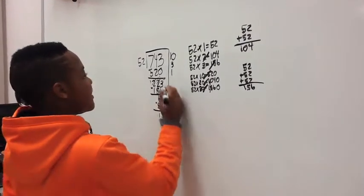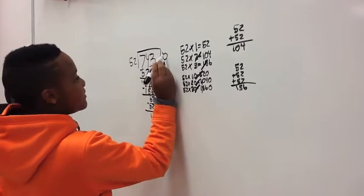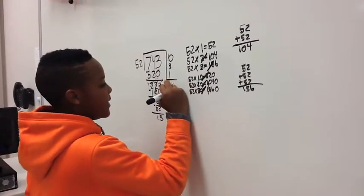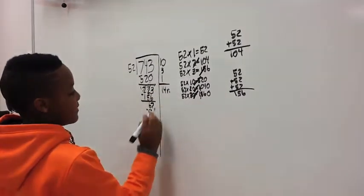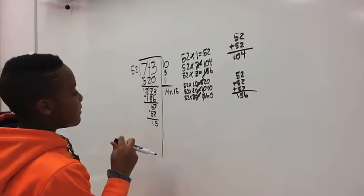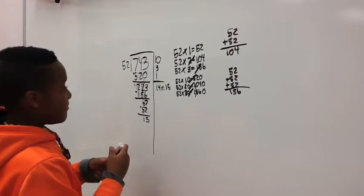Okay. So the answer, you add these up. Then the remainder is how many is left. So your answer would be 14 remainder 15. That would be your quotient? Yeah. Awesome work. Thanks for sharing.